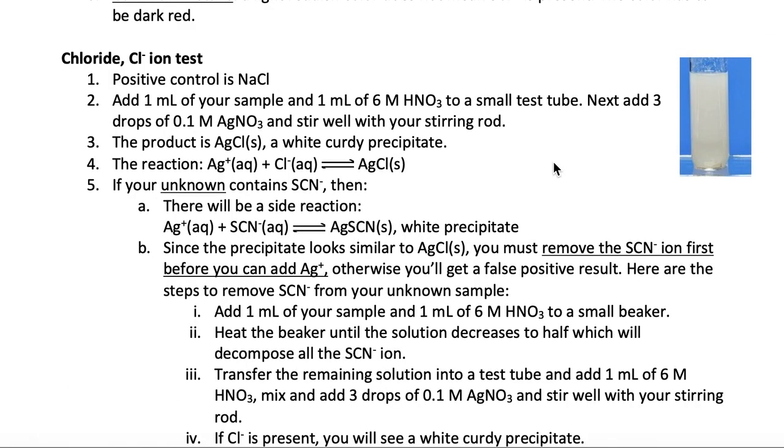Okay, so the next test is for the chloride ion using NaCl as your positive control. In this case, you will add nitric acid and silver nitrate to your sample, which will cause the formation of a white curdy precipitate of AgCl shown here in this picture. The reaction is shown here.